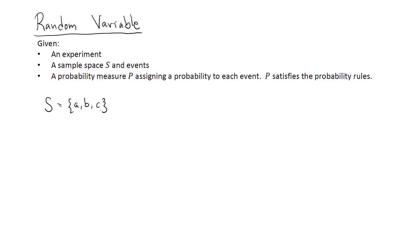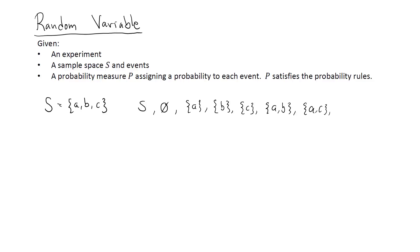Performing the experiment will lead to one of these possible outcomes being selected. Let's consider all possible events we can create from this sample space. These events are: the entire S, the empty set, the collection of only A, the collection of only B, the collection of only C, A and B, A and C, and finally B and C.